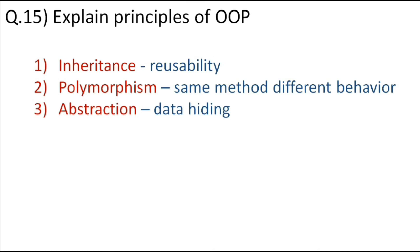The third principle is abstraction, in which we hide the implementation details from the user. It is achieved by interface and abstract class. In an interface or abstract class, we only show what a method does — for example, declaring an add method that takes two integers, adds them, and returns the sum — but we don't show how we are going to implement it. This property of data hiding is achieved by abstraction.